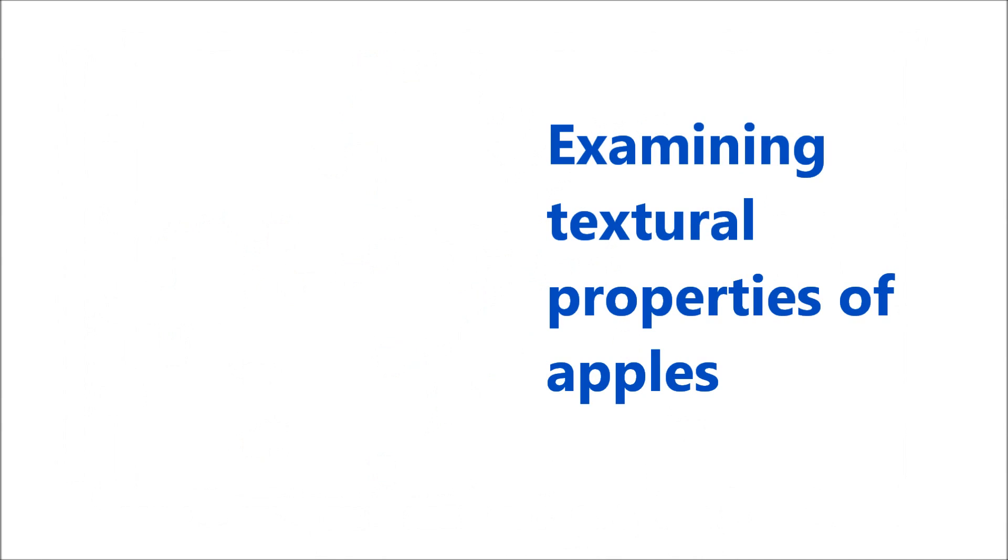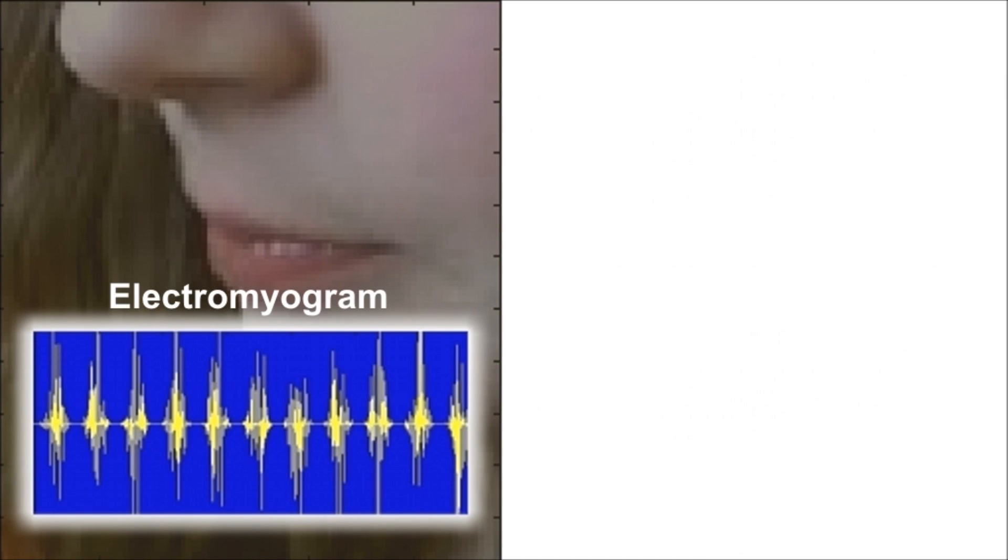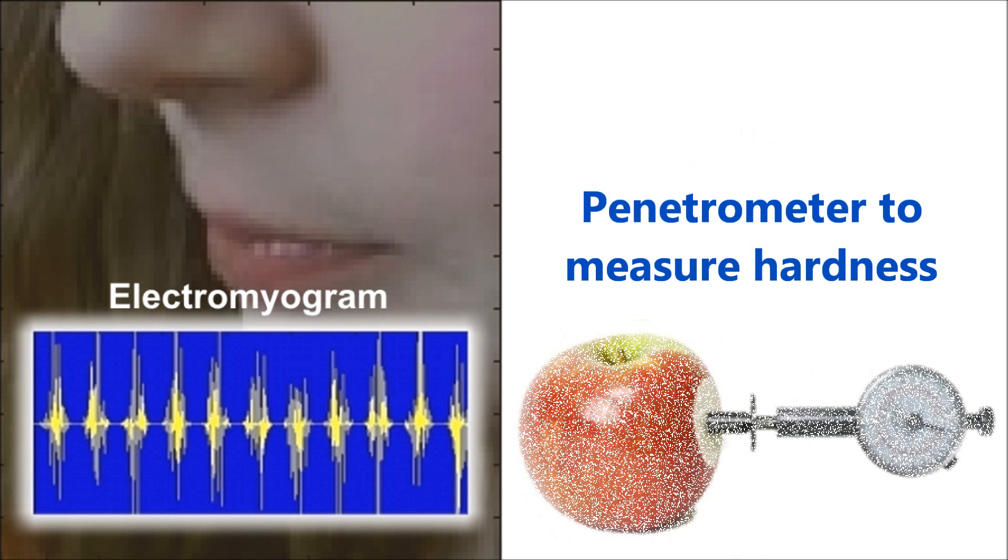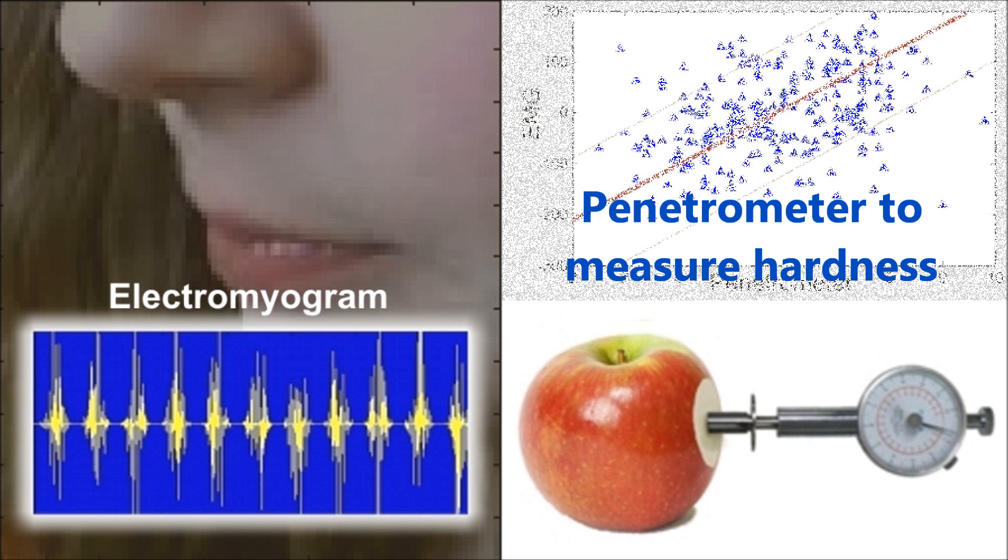When this between-subject variance is factored out, electromyograms can be correlated with very subtle properties of the foods. For example, we were able to use EMG to predict the mechanical hardness of apples that have been exposed to different storage conditions.